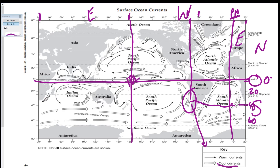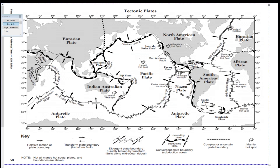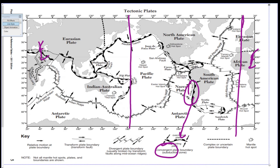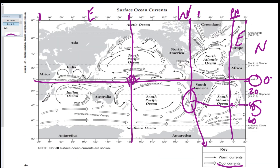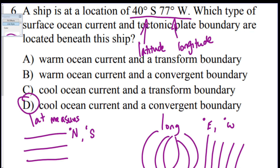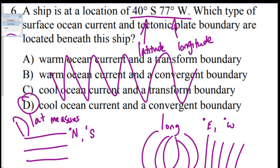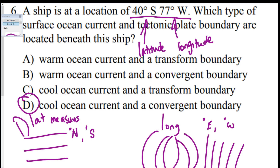The Peru Current is a cool current. Then on the tectonic boundaries map on page five, the same location corresponds to the Peru-Chile Trench, which has a convergent boundary symbol. So the answer is cool current and convergent boundary — answer D. A good test-taking strategy: cover the answers, figure it out yourself, then check.